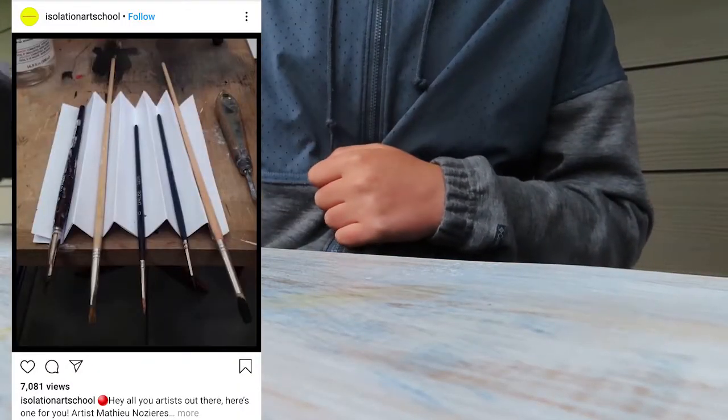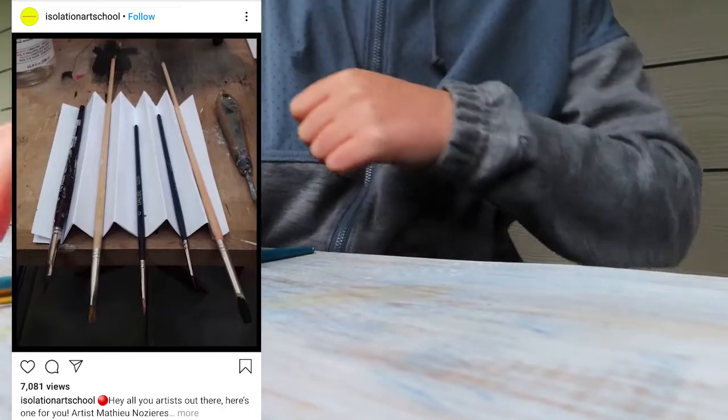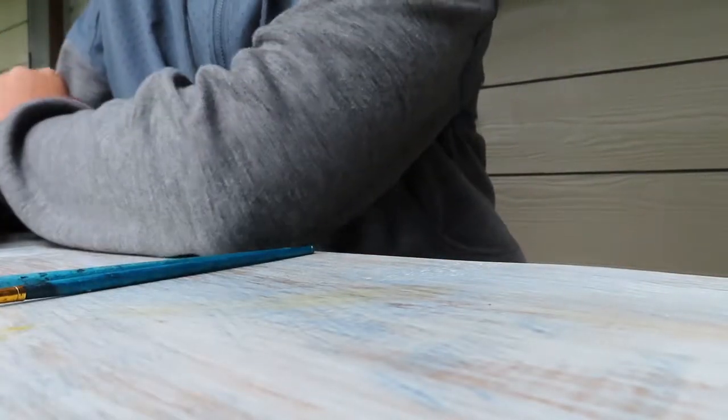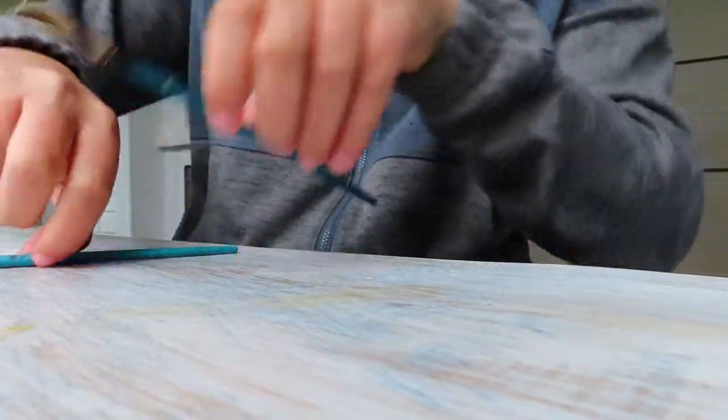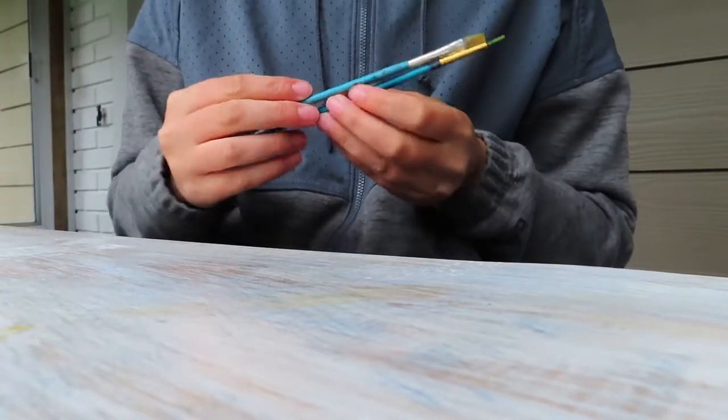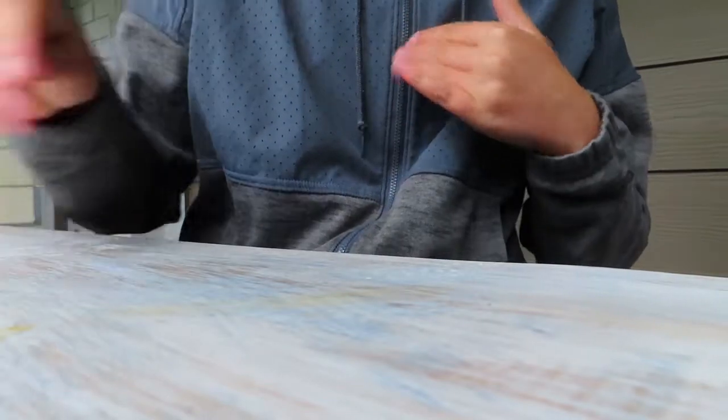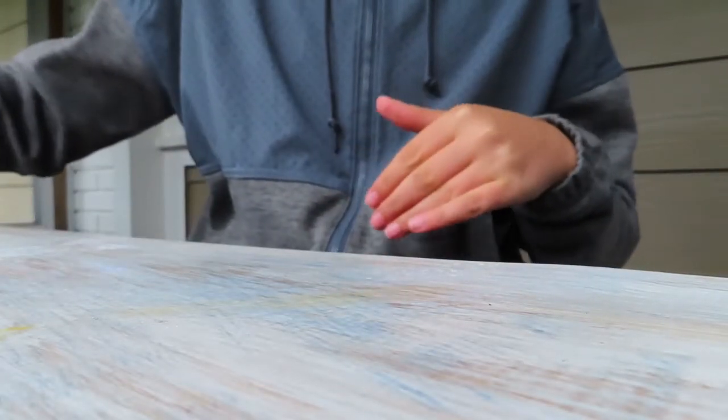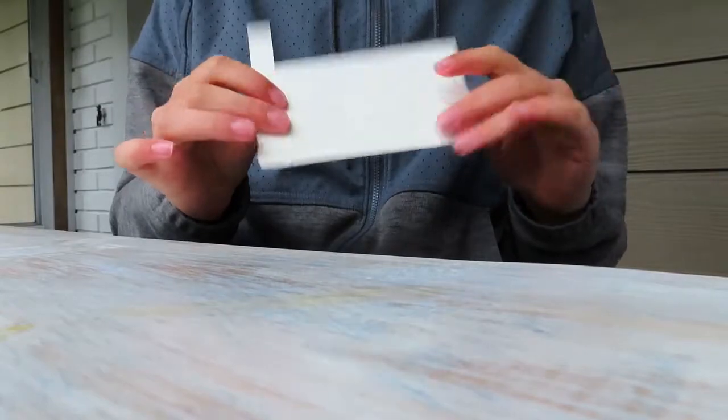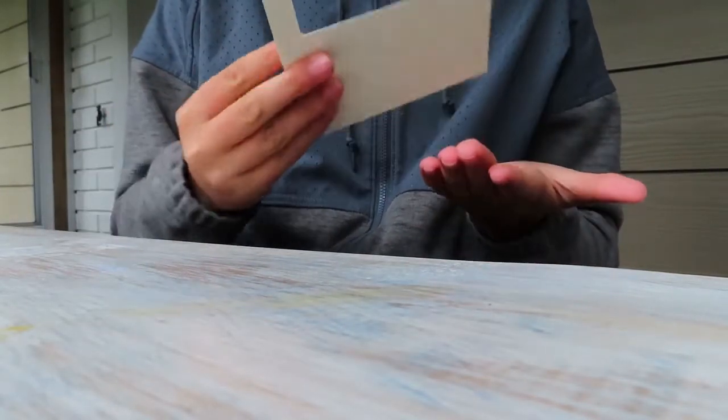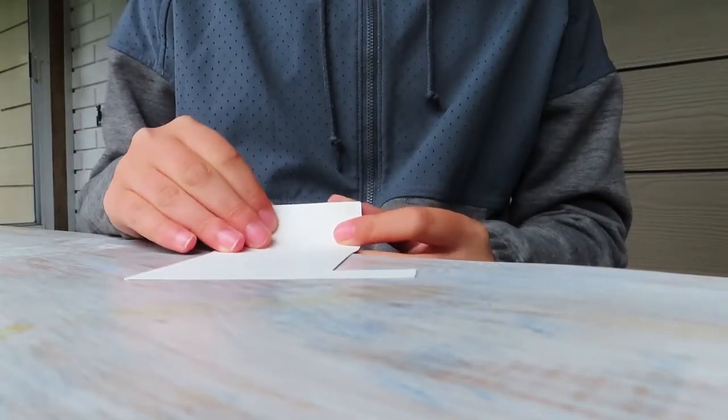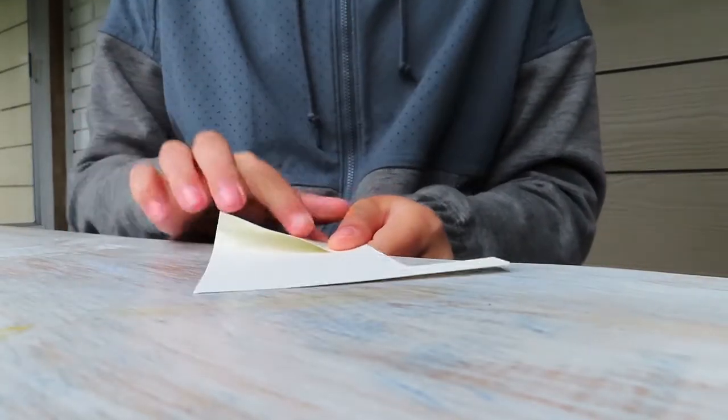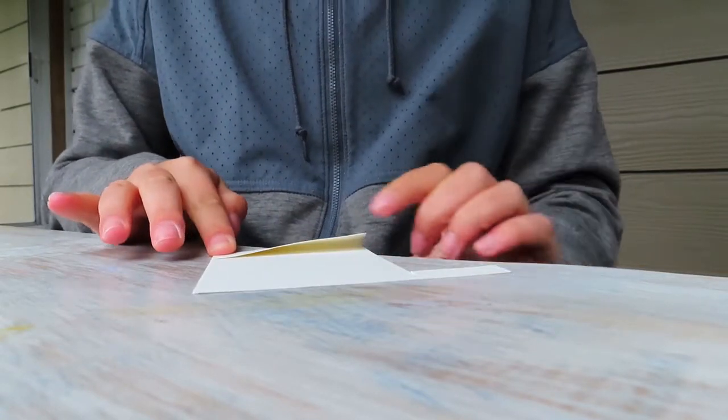So the next hack is if when you are painting or drawing and you accidentally always bump your paint brushes around. Basically, what I'm going to do is take a piece of paper. You probably want thick cardstock. This is just some extra pieces of cardstock that I found laying around.